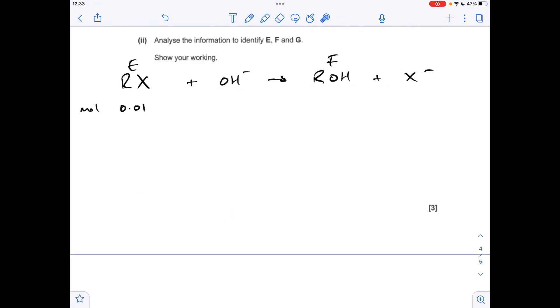Moving on to the last part of the question now. So I've come up with a sort of generic equation for what's happened. So we've got our haloalkane E. It's been hydrolyzed, and we've formed alcohol F and halide ion. And we were told that we had 0.01 moles of the haloalkane. So because of the mole ratio, 1 to 1 to 1, we're going to get 0.01 moles of F and 0.01 moles of X minus a halide ion.